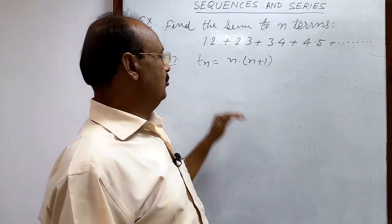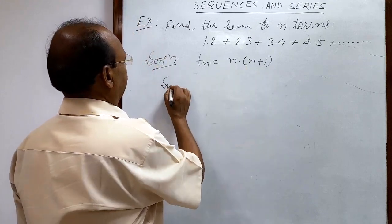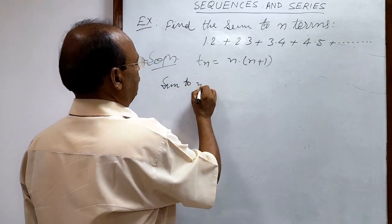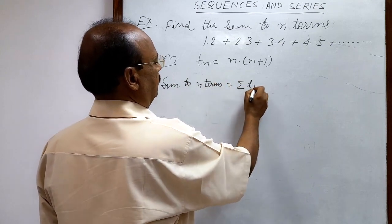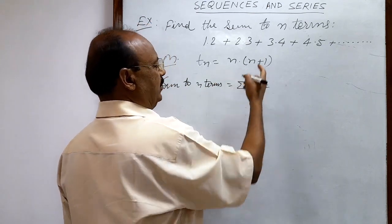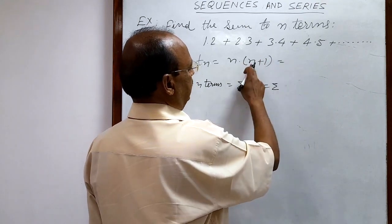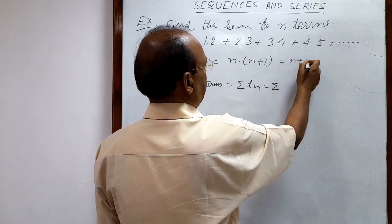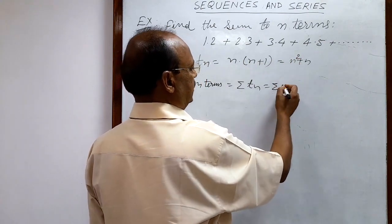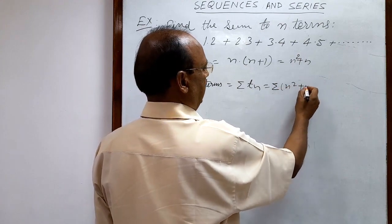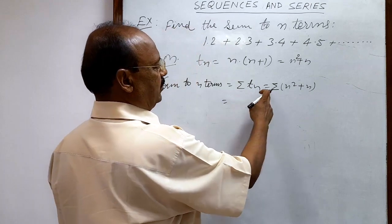This is the general term. First we must understand what the nth term is before finding the sum. Then we apply sigma over this expression. The sum to n terms is sigma of Tn. Sigma will be applied over here as sigma of n² + n. Sigma will be distributed over both terms.